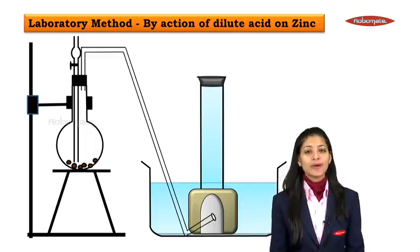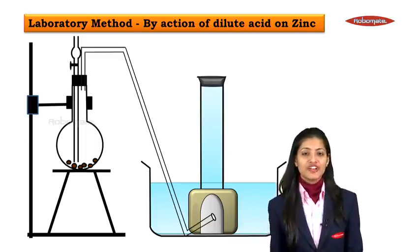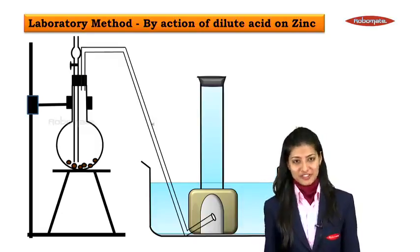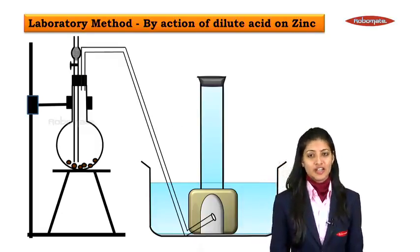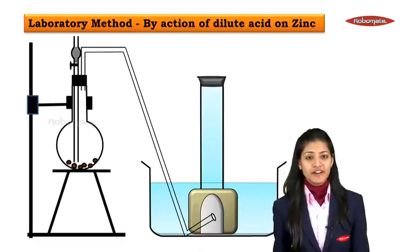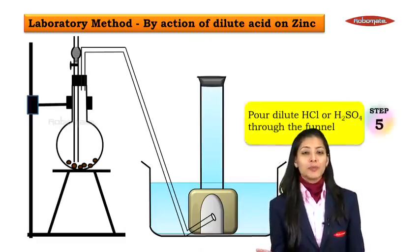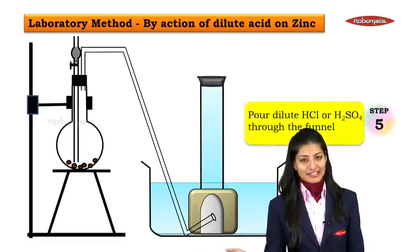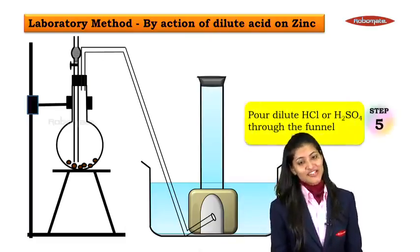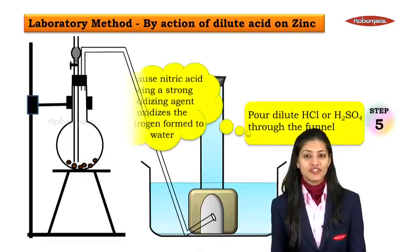Now that the apparatus setup is done, let us move ahead and perform the experiment. Through the thistle funnel, we are going to pour either dilute HCl (hydrochloric acid) or dilute sulphuric acid.